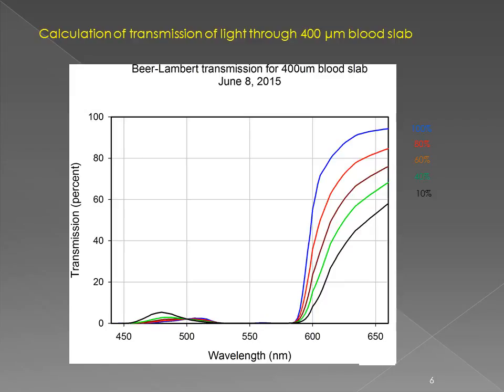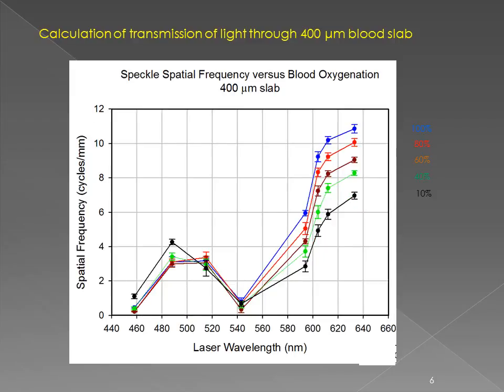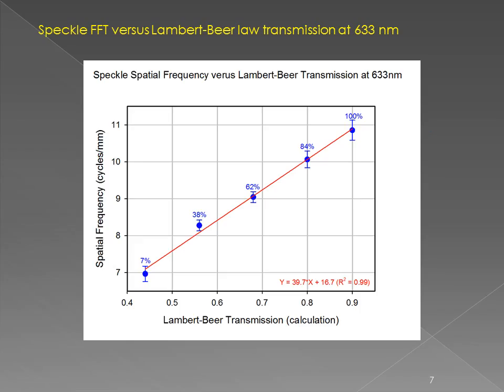You might notice that for 10% oxygen saturation, the transmission is the highest at wavelengths less than 500 nanometers. If we now look at the same thing for spectral spatial frequency, we see a very similar looking pattern — again, for 10% oxygen saturation, the highest values are under 500 nanometers. We then look at the values of spectral spatial frequency at 633 nanometers at these five different oxygen saturations and plot them versus the calculated Lambert Beer Law transmission. The result fits a straight line very nicely, indicating that the speckle depends strongly upon the oxygen saturation.